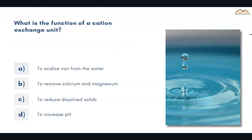What is the function of a cation exchange unit? The correct answer is B, to remove calcium and magnesium.